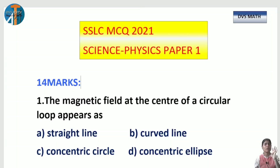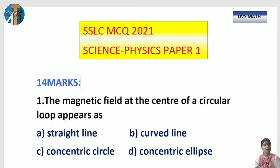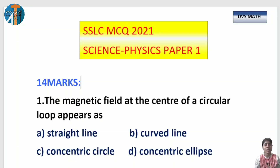The combination of all 4 lessons — Light, Sources of Energy, Magnetic Effects of Electric Current, and Electricity — together carry 14 marks. Sources of Energy has only 2 marks. Today I will discuss Physics Sample Paper 1, going through the questions and answers so you can identify and practice them.